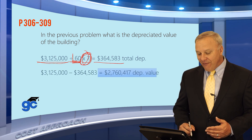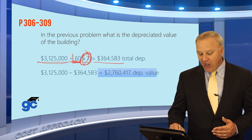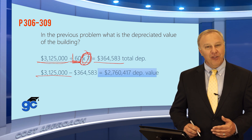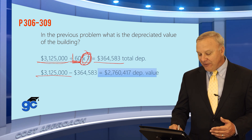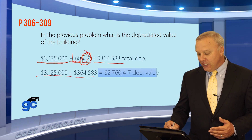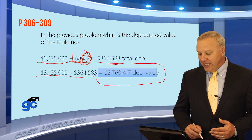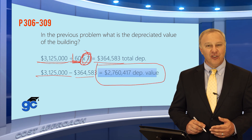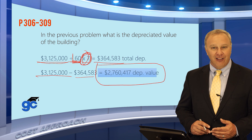Taking it one step further: if we take the reproduction cost of $3,125,000 and subtract the depreciation, the depreciated value of the building is $2,760,417.